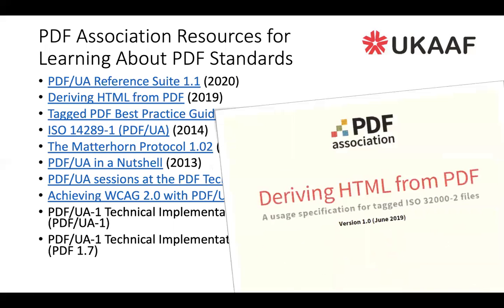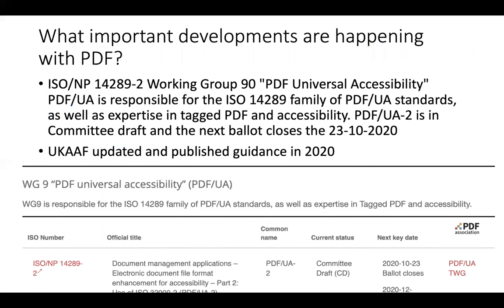So what important technological developments are happening with PDF? The standard continues to evolve and currently ISO 14289-2, the Working Group for PDF Universal Accessibility, is responsible for developing the standard. PDF/UA 2 is in committee draft and the ballot for that closed on the 23rd of October 2020. Already PDF 2.0 incorporates reference to PDF/UA, and UCAF guidance was published and updated in 2020 as well.